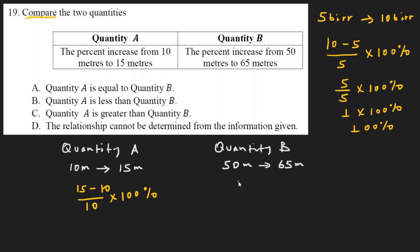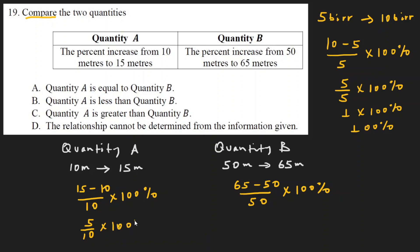15 minus 10, divided by 10, times 100 percent. That gives us 5 divided by 10, times 100 percent. Simplified: 5 divided by 10 equals one-half, times 100 equals 50 percent.